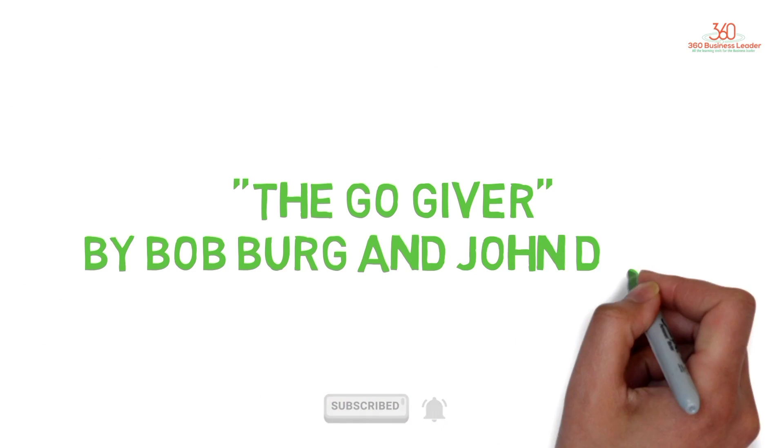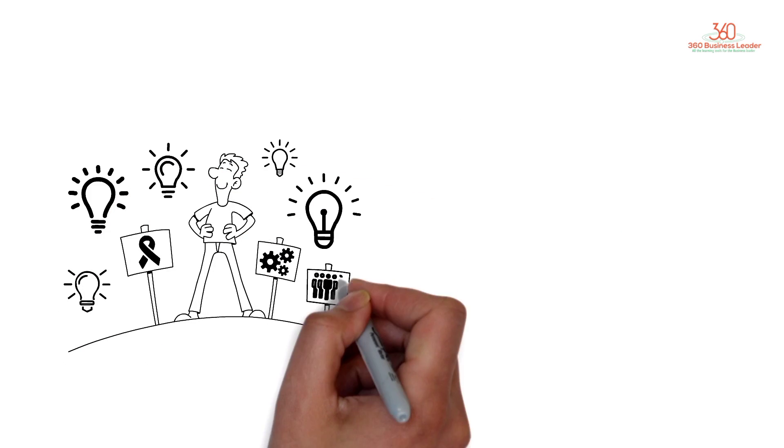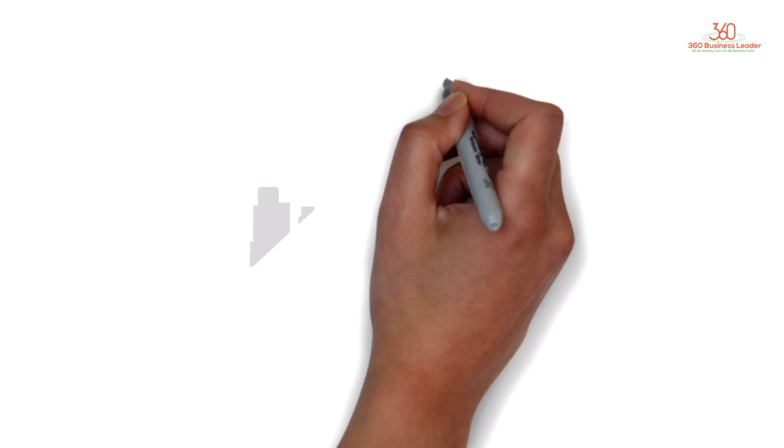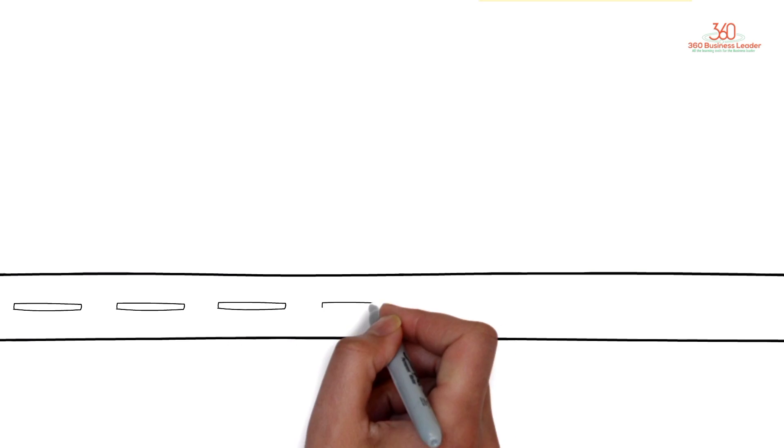The Go-Giver by Bob Berg and John David Mann: a little story about a powerful business idea. The tale of enigmatic Pindar and Joe. Joe the go-getter is an ambitious young man aiming for the stars. The harder and faster he worked, the further away his goals appeared.